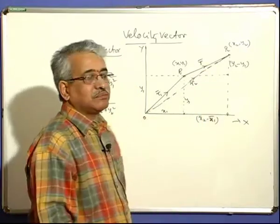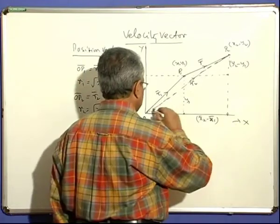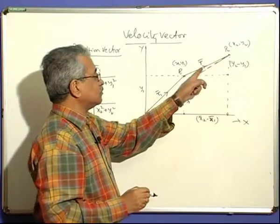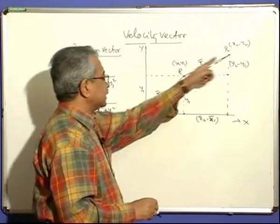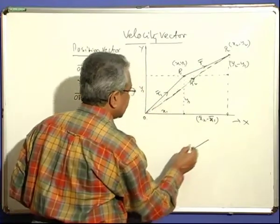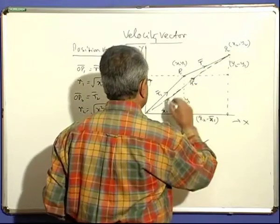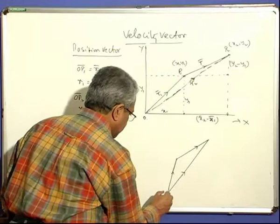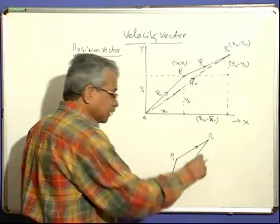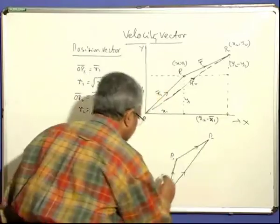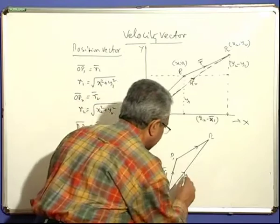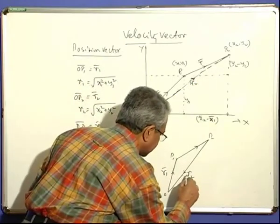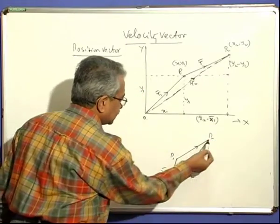Now consider the vector notation. How do we get P1P2? OP1 is one vector and OP2 is another vector. When a particle moves from P1 to P2 we must get the vector P1P2. From the triangle of vectors: I redraw for clarity — this is OP1, this is OP2. According to the triangle of vectors, when two vectors are in one order, the third vector in the reverse order gives you their sum. This is r1; if I reverse r2 and write it in the opposite direction, that becomes minus r2. So minus r2 plus r1 gives this. Now if I write minus r1, the direction reverses.